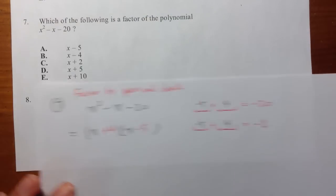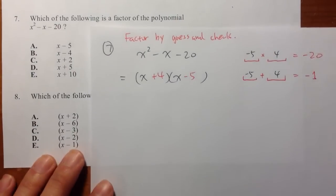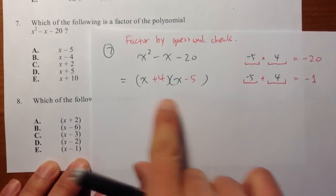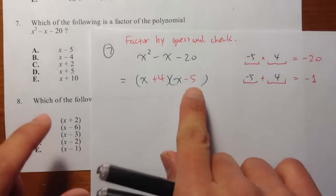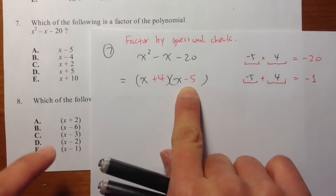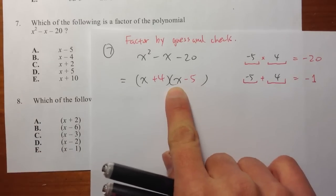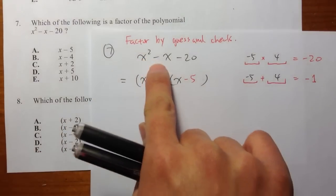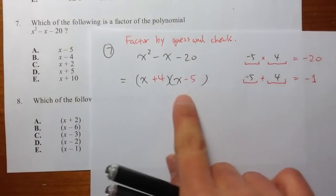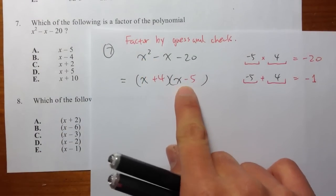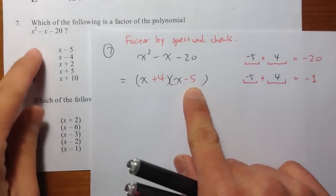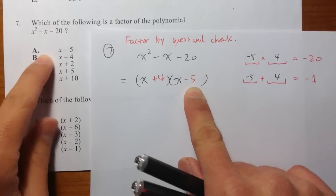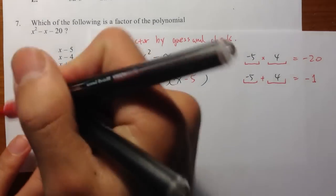So this is how you factor it. Let me take a look at the answer choices. One of the factors of x squared minus x minus 20 is x minus 5, and that's exactly choice A.